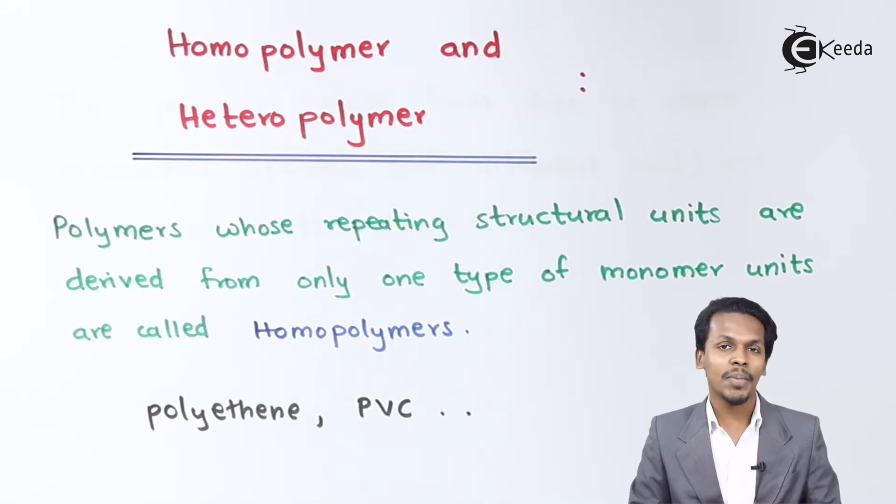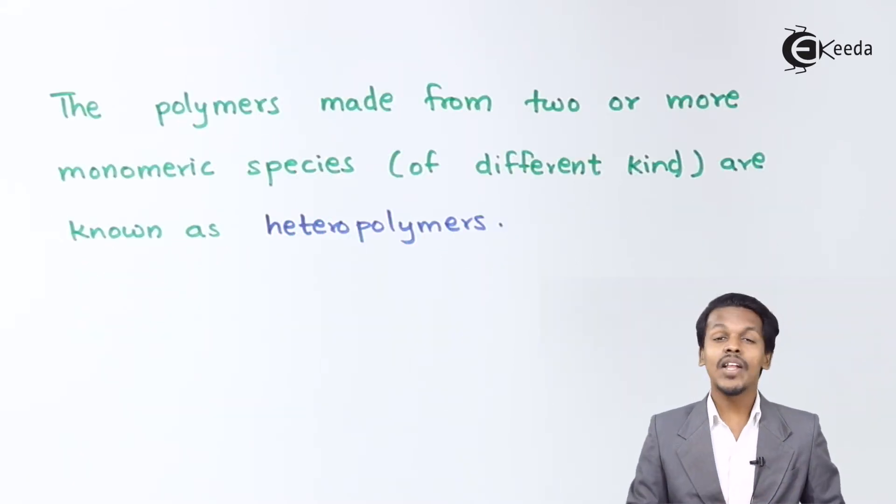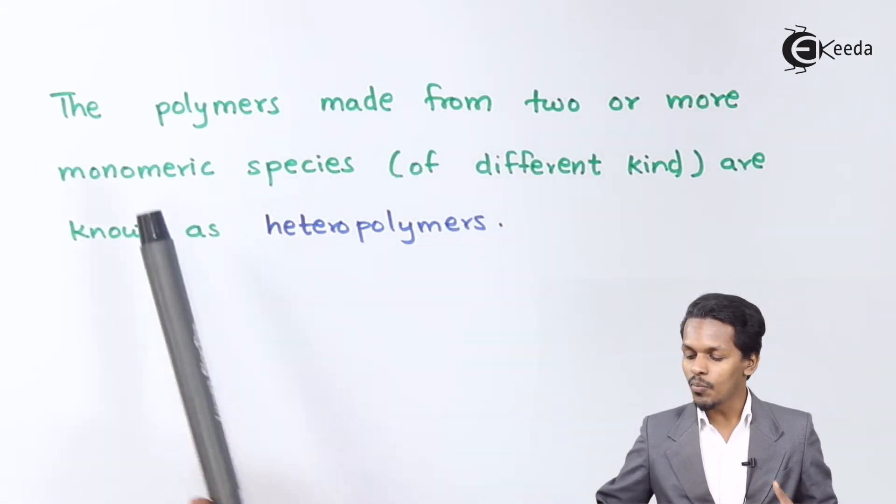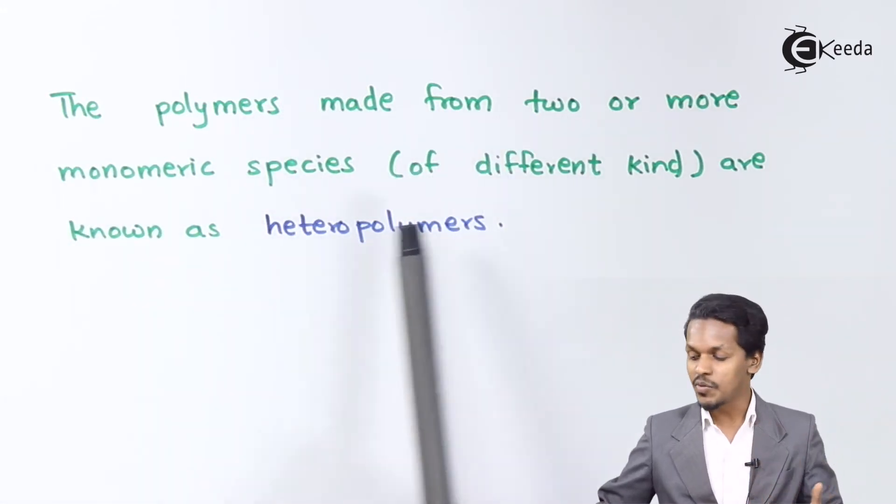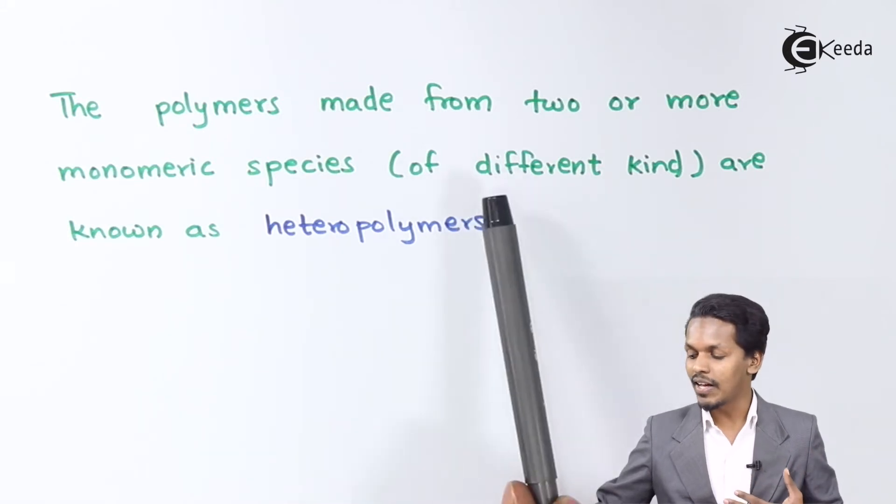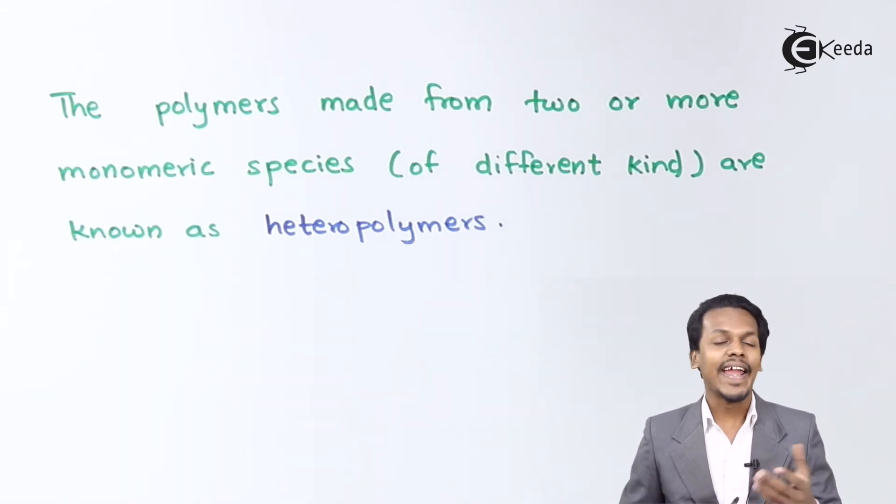This was related to homopolymer. Now let me talk about heteropolymer. The polymers made from two or more monomeric species, of which both the monomers are of different kind, are known as heteropolymers.